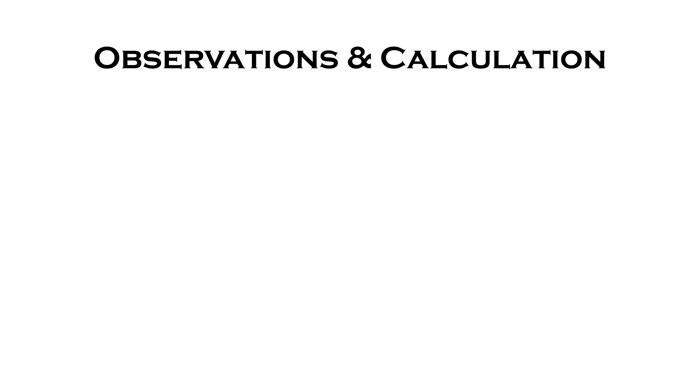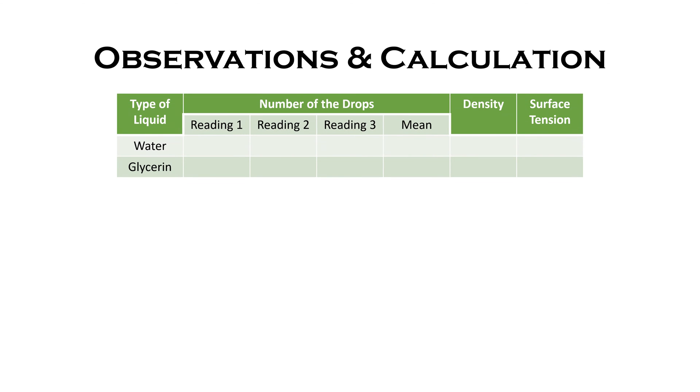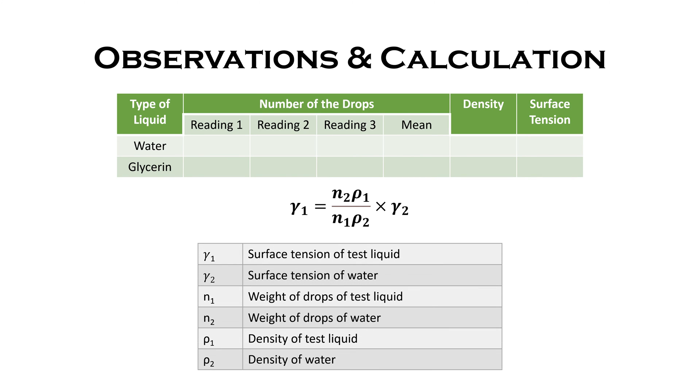These are the observation and calculation for the practical. In this, an observation table is prepared with types of liquids, number of drops, density, and finally surface tension. By using the formula given below, the surface tension of unknown liquid can be calculated.